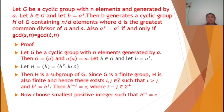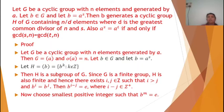Since H is a finite subgroup of G, there exist integers i and j with i greater than j such that b raised to i equals b raised to j. Then b raised to (i minus j) equals e, where i minus j is a positive integer. We choose m as the smallest positive integer such that b raised to m equals e.